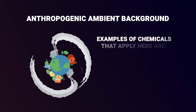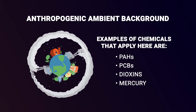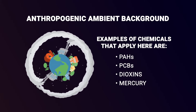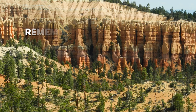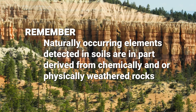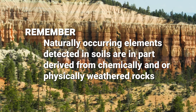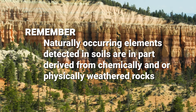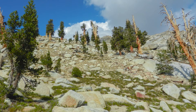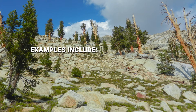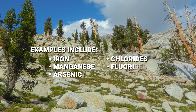Examples of chemicals that apply here are PAHs, PCBs, dioxins, and mercury. These can be persistent and ubiquitous and can be transported long distances with wind or water. It's important to remember that naturally occurring elements detected in soils are in part derived from chemically and/or physically weathered rocks, so geological characteristics should also be considered. It is possible that some of these naturally occurring elements are the same as the chemicals of potential concern at the investigation site. Examples include iron, manganese, arsenic, chlorides, fluorides, and sulfates.